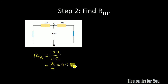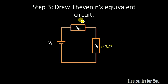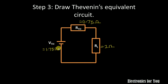Rth is 0.75 ohm. Now the next step is to draw the Thevenin's equivalent circuit. In the Thevenin's equivalent circuit we have Vth and Rth in series with the load resistor. The load resistor value is 2 ohm, Rth is 0.75 ohm, and Vth is 1.75 volt.